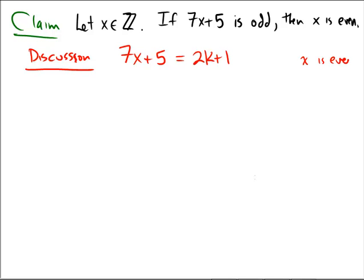X is even. So that means x should be equal to 2 times something, 2 times some l. Now unfortunately, as I start to play with this here, if I'm going to try to isolate the x, I guess I would first subtract 5 from both sides to get to 2k minus 4. And then to isolate x, I would have to divide by 7.